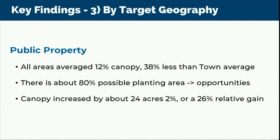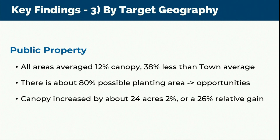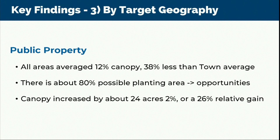The public property geography assessed all publicly-owned properties. All areas averaged about 12% tree canopy — significantly less than the town average — but many of these are tidal areas where trees don't naturally grow. There is 80% possible planting area, which could represent an opportunity, though tidal vegetation may also be skewing numbers. There is good news: canopy increased by about 24 acres total, a 2% raw gain or a 26% relative gain compared to 2014.